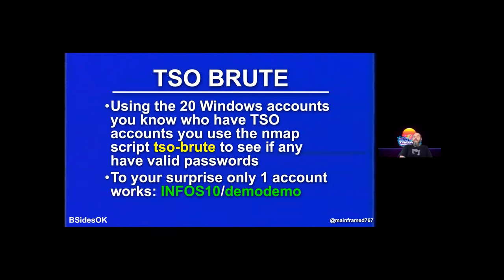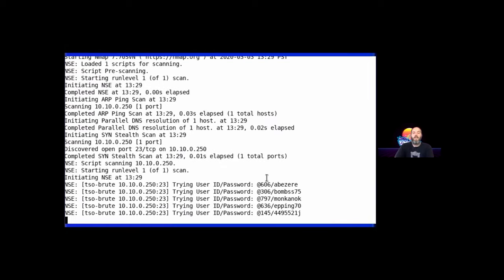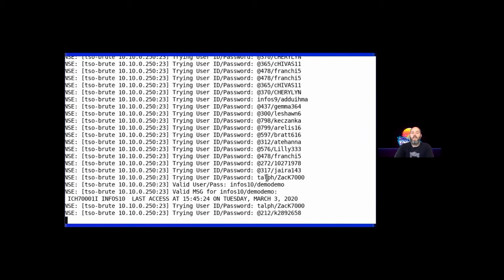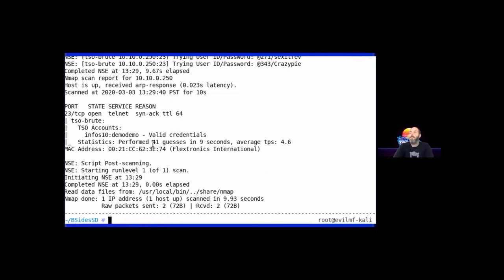Taking those 20 accounts, we run an nmap script called TSO-brute. The key thing is that enumerating typically won't trigger an alarm because you're not causing invalid account lockouts — you're just checking existence. And we find a valid user: InfoS10, password demo/demo. Obviously some demo account used for sales or testing. Here's what the scan looks like — a whole bunch of accounts tested quickly, and boom, we've got one account.